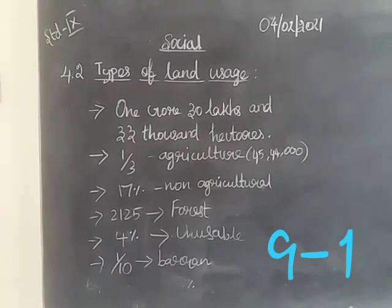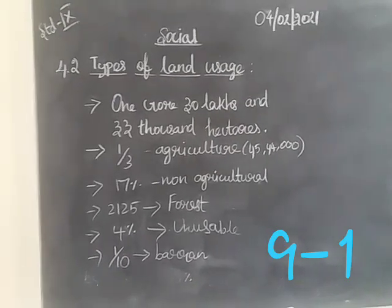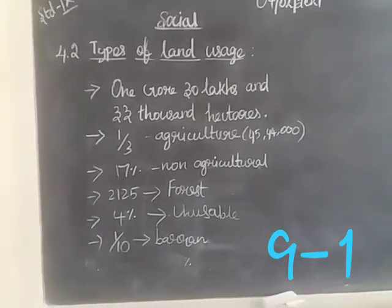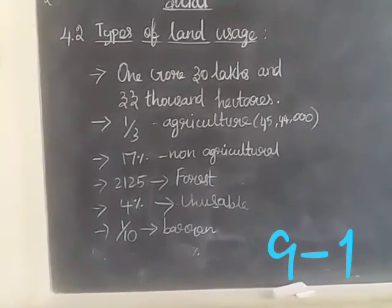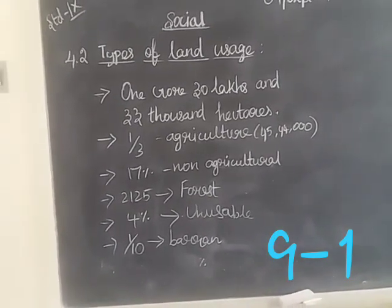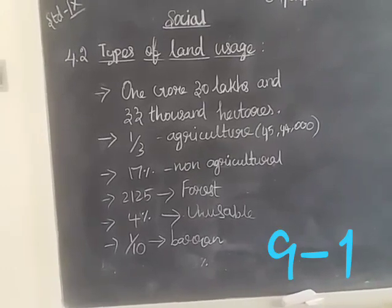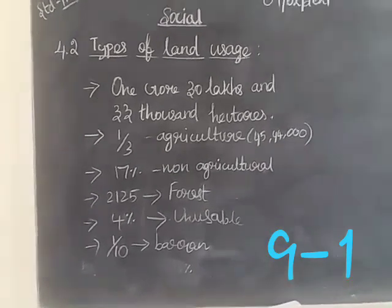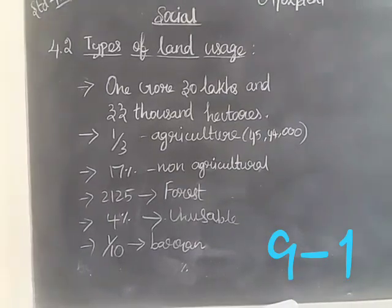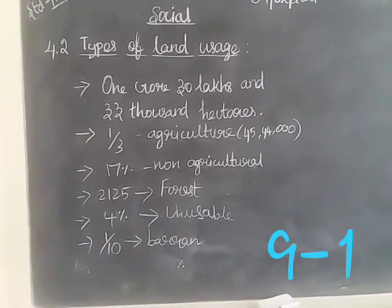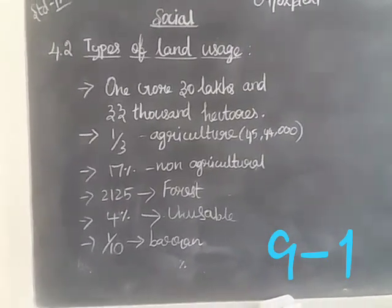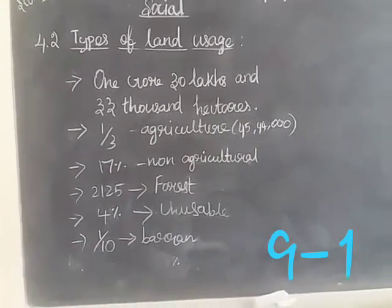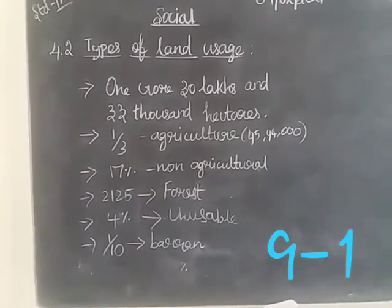Good morning students. Today we are going to study about the types of land usage. The total geographical area of Tamil Nadu is one crore 30 lakhs and 33,000 hectares.